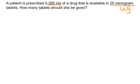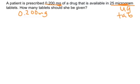The first thing I'm going to do with this problem is write down the initial starting information: 0.200 milligrams. The final amount I'm trying to get to is going to be in tablets. I also want to notice that I have milligrams and micrograms, which are not the same unit, so I'm going to need to convert between those.